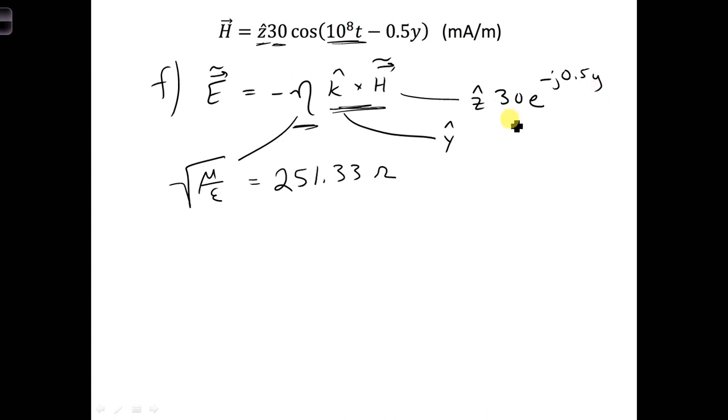Now this 30 here, we have to notice that there's milliamps. So let's go ahead and multiply it times 10 to the minus 3, because if we leave it as milliamps, we might forget to take that into account and get the correct amplitude for our electric field. So we want this in terms of amps per meter when we're solving for our electric field.